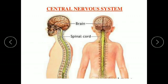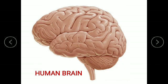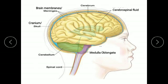Central Nervous System consists of brain and spinal cord. Brain is the control center of the body. It is round in shape and has many ridges and grooves on its surface. It is found inside the skull or cranium. The brain is covered by brain membranes called meninges. Brain membranes have fluid in between them known as cerebrospinal fluid. The brain is made up of three parts: cerebrum, cerebellum, and medulla oblongata.